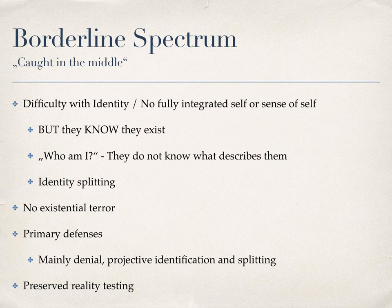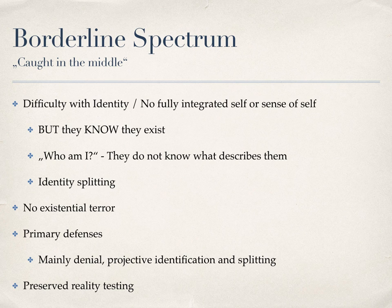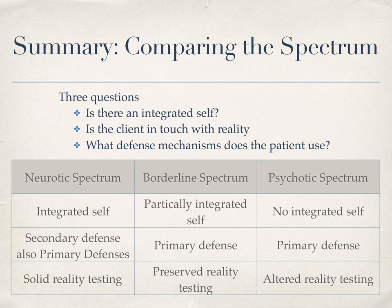This splitting already brings us to their defense mechanisms. Denial and projective identification are often used, yet the most distinct is splitting. It is so characteristic for borderlines that the DSM-IV mentions it for borderline personality disorder and characterizes it as a pattern of unstable and intense interpersonal relationships characterized by alternating between extremes of idealization and devaluation. These mechanisms lead to the problem of reality testing — a borderline's reality often does not match the observing reality. Three questions need to be kept in mind: Does the patient have an integrated self? Is the client in touch with reality? And what defense mechanisms does the patient use? You can pause the video to look over the chart and compare the spectrums.